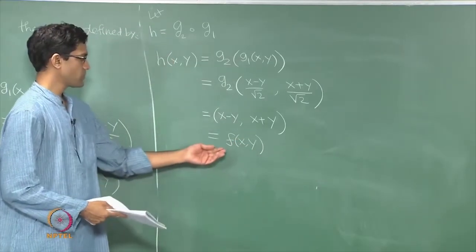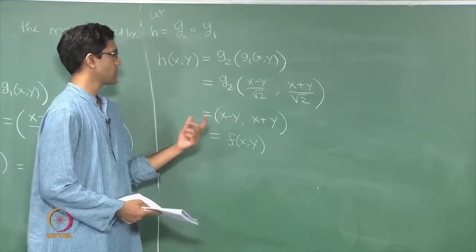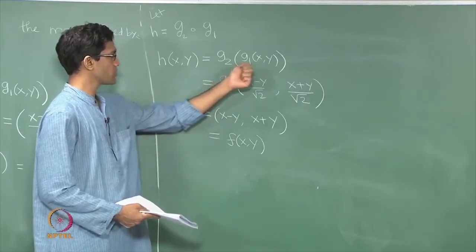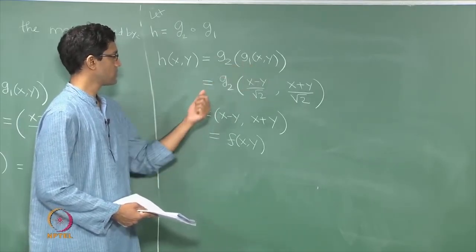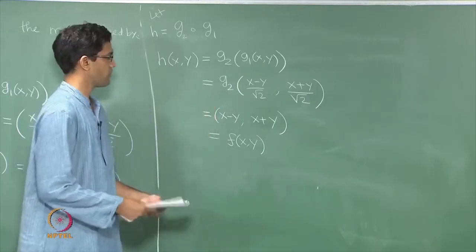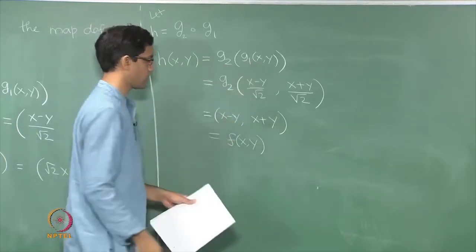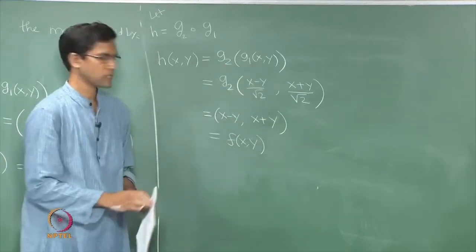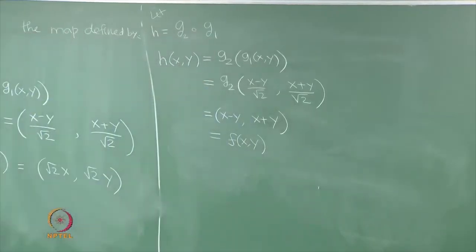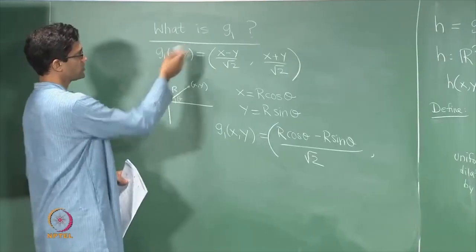So f is a composition of two simpler functions, g₂ ∘ g₁. We now understand g₂ — it is a dilation by √2. The only remaining part of the puzzle is to understand what g₁ really does.